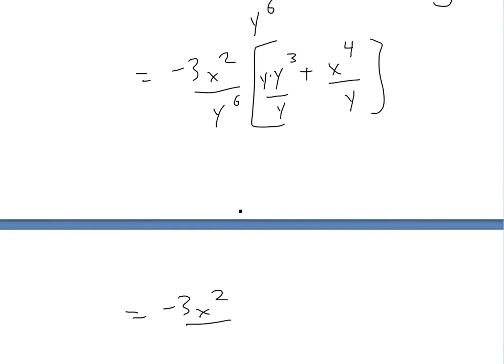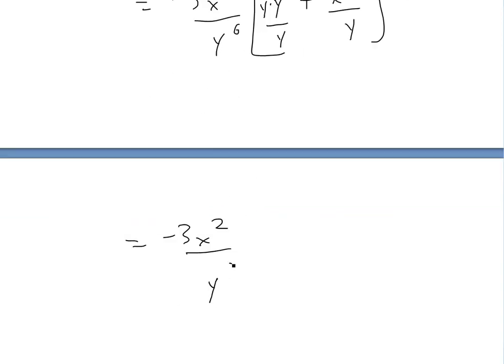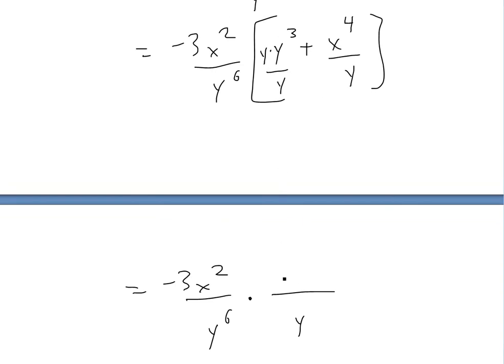So then this would be written as now equals to -3x^2. Now this is y^6, but then again we're having a common denominator, so we'll multiply this by y right here, and this becomes y^7. And I'll show you the interesting part, the tricky part right here.